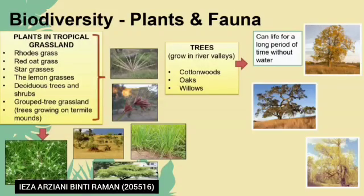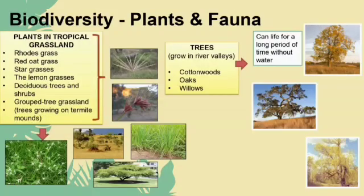Biodiversity for plants. In this biome, we can find Rhodes grass, redwood grass, star grasses, lemon grasses, wall trees and shrubs, fruit tree grassland and trees growing on termite mounds. For trees, most can live for a long period of time without water, and trees grow in the river valley. Most of the trees are cottonwood, oak and willow.